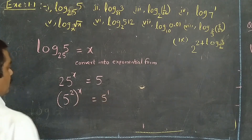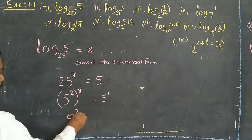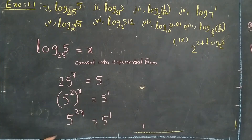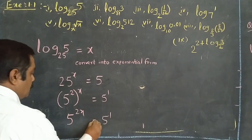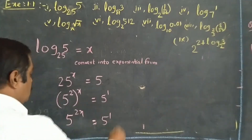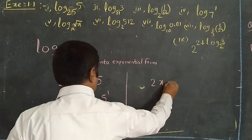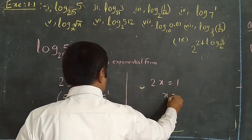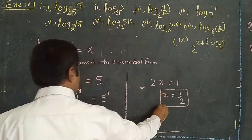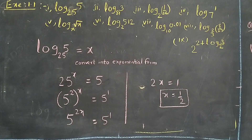So (5²)ˣ = 5¹, which means 5^(2x) = 5^1. When bases are equal, powers are also equal. That's why 2x = 1, so x = 1/2. This is the answer.